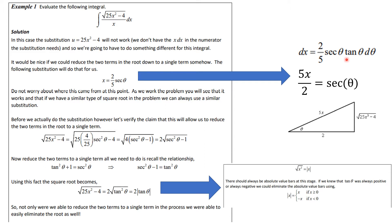If x = (2/5) sec θ, then dx = (2/5) sec θ tan θ dθ. We also know from right triangle trigonometry that if θ is our angle and sec θ = 5x/2 — since secant is hypotenuse over adjacent — we can find the third side using the Pythagorean theorem. This simple substitution generates three additional facts.